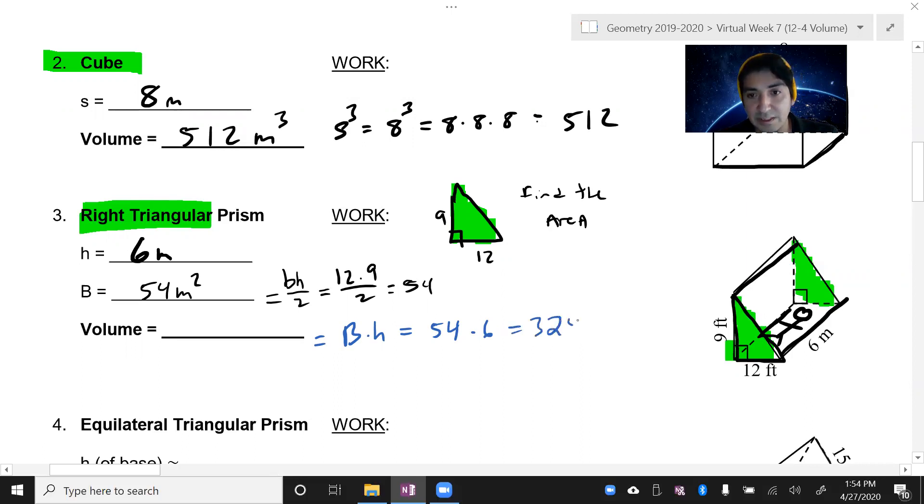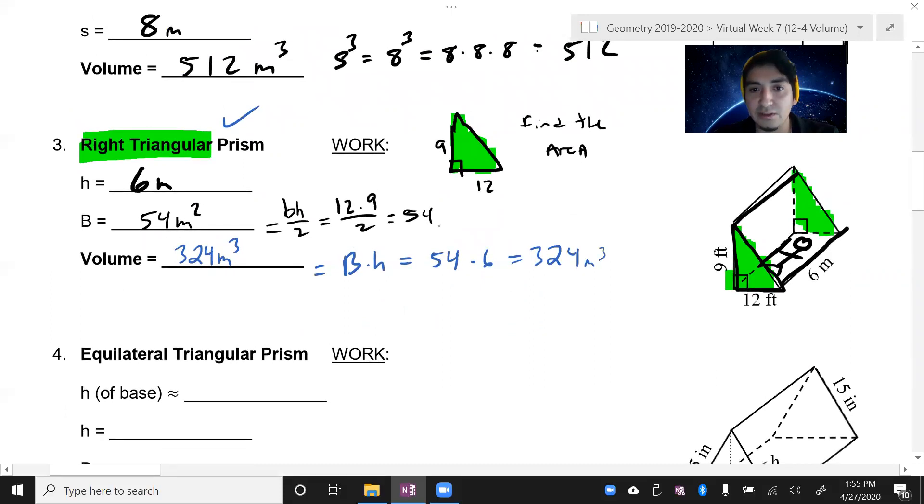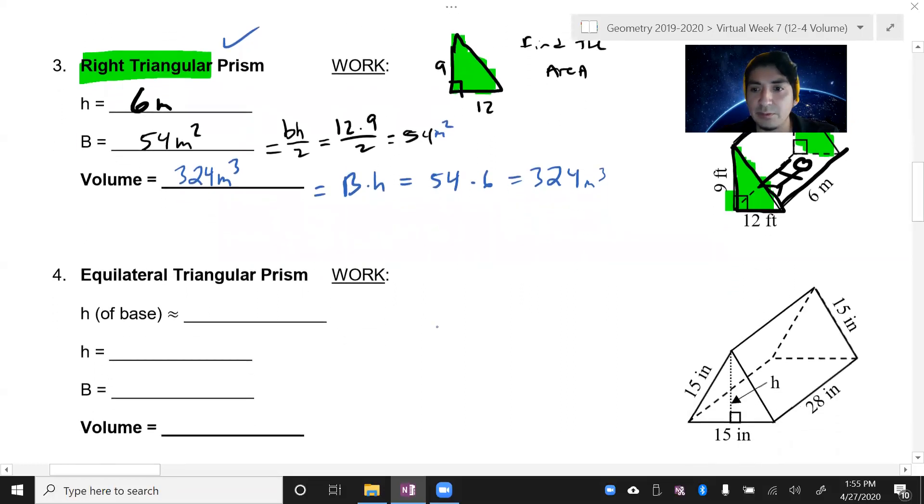Now the next one is going to be capital B times H, which is 54 times 6, which equals 324. So 324 meters cubed. So there you go, you have a cube and you have a prism right here to work with. Meters cubed, meters squared. Don't forget about your units. Your units are really important.